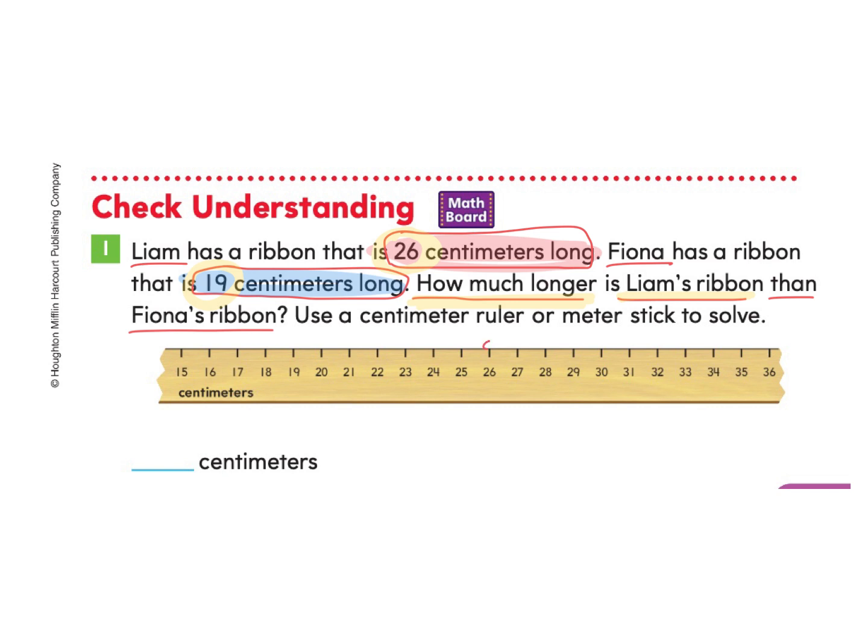So I'm going to go ahead and I'm going to draw a dot here on the 26 to represent Liam's ribbon. Then I'm going to draw a dot here on 19 to represent Fiona's ribbon. Now what I'm looking to find is this part right here. Because this shows us the difference between Liam's ribbon, which stops here, and Fiona's ribbon, which stops here. So I have 26 and I have 19 and I'm trying to find the difference between them.